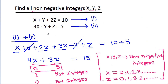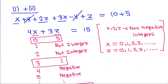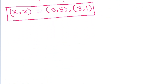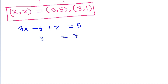And we have 3x minus y plus z is equal to 5, so y will be equal to 3x plus z minus 5.